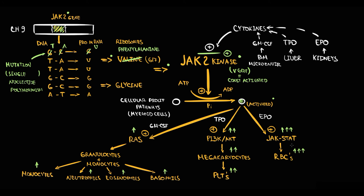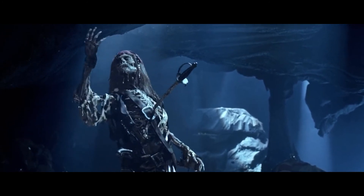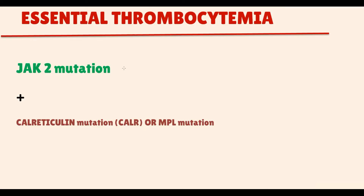The specific feature of essential thrombocythemia is the presence of additional mutations. In essential thrombocythemia, we have the JAK2 mutation, and on top of that we have additional mutations. Nowadays, the two most common mutations associated with essential thrombocythemia are: a mutation in the calreticulin gene (CALR), present in 20–40% of patients, and a mutation in the MPL gene, present in 5–10% of patients. There can also be other mutations, but these two are the most common.